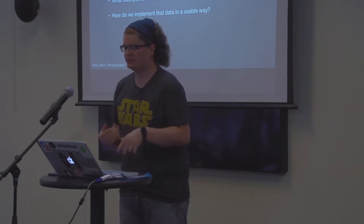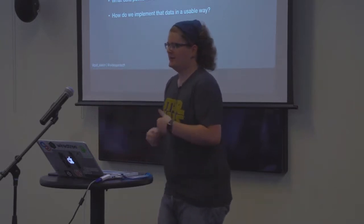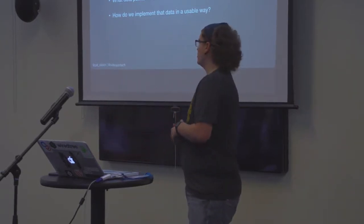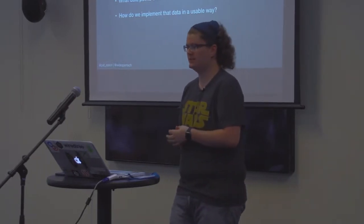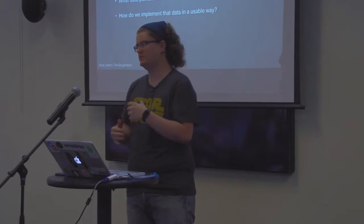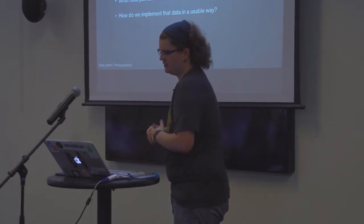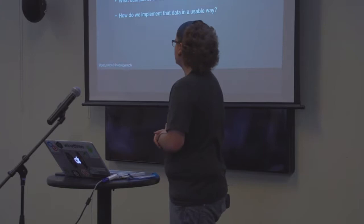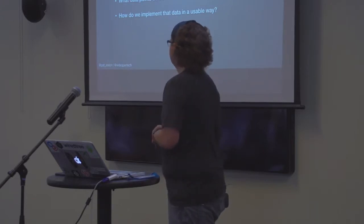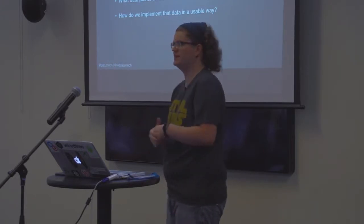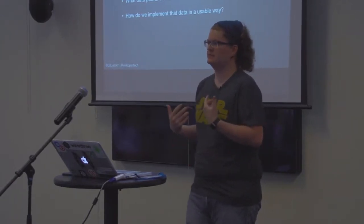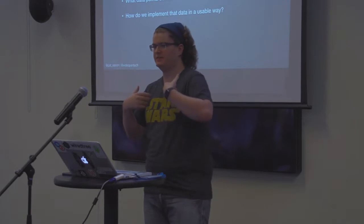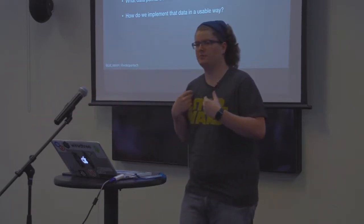I'm going to start with three questions we'll ask along the way. First: how do we structure content WordPress style? WordPress has a specific way it wants to handle content — both posts and taxonomies. Second: what data points do we have and how should we properly organize them into that content structure? And third: how do we implement that data in a usable way, both for administrators and for ourselves as developers and designers? What good is it to us if it's no good for the administrators, and vice versa? We really have to balance this.